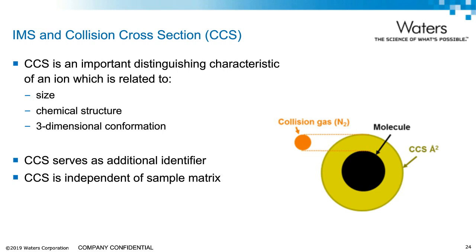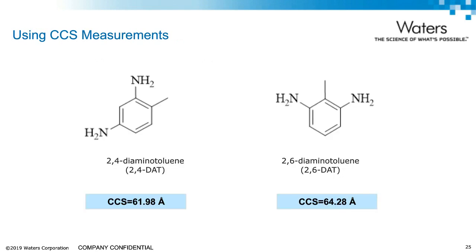Here's one example. These diaminotoluene isomers almost co-elute chromatographically. But with ion mobility, we can use their CCS values to distinguish them and separate them. So we can use their LC retention time, their mass-to-charge ratio, and their CCS value to confirm their identity.